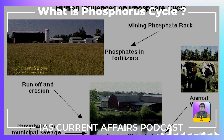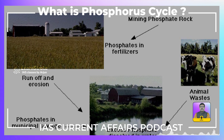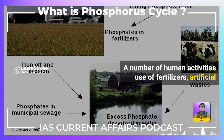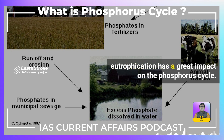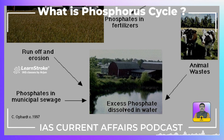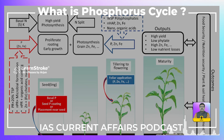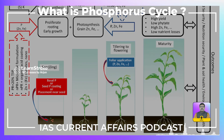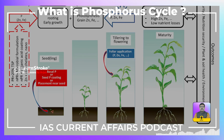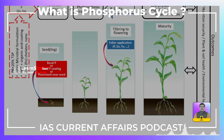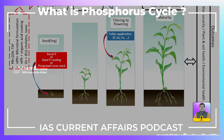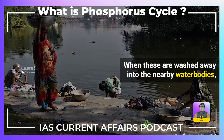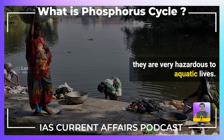What are some of the important human impacts on the Phosphorus Cycle? A number of human activities, such as use of fertilizers and artificial eutrophication, have a great impact on the Phosphorus Cycle. Phosphorus fertilizers increase the level of Phosphorus in the soil, but overuse of these fertilizers reduces the fertility of the soil and is also harmful to the microorganisms present in the soil. When these are washed away into nearby water bodies, they are very hazardous to aquatic life.